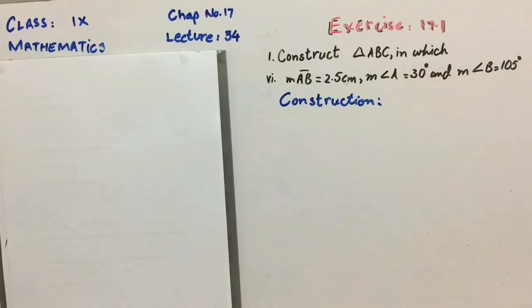Assalamu alaikum students. In last lecture we learned to construct a triangle with two sides and their included angle. Today we shall learn to form a triangle with two angles and their included side. This is the converse of the previous one.